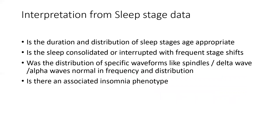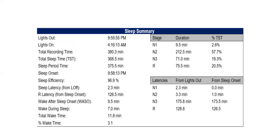What data are we inferring from the sleep stage record? Is the duration and distribution of sleep stages age-appropriate? Is the sleep consolidated or interrupted with frequent stage shifts and frequent wakes? Is the distribution of specific waveforms like spindles, delta, and alpha normal in frequency and distribution? Is there any associated insomnia phenotype — for example, a long sleep latency or lots of sleep fragmentation? A lot of information can be gathered from this, and this entire information is presented in the sleep study report.